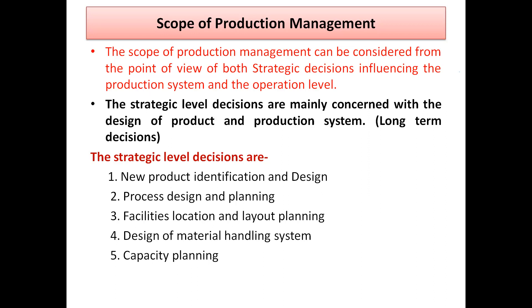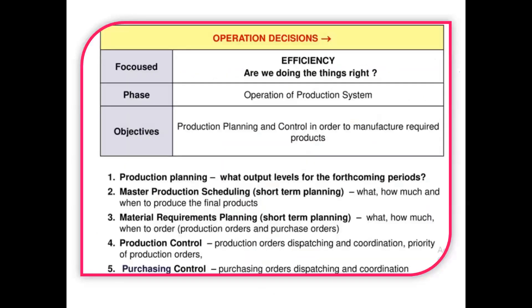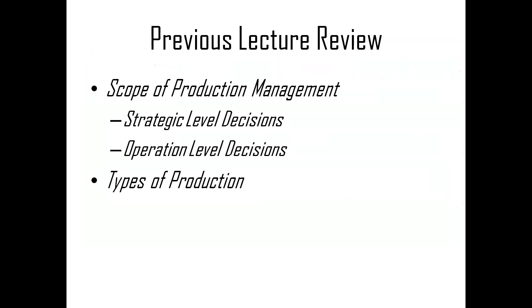For example, when a new vehicle is launched by any automotive sector company, the planning for that two-wheeler or four-wheeler may have started four to five years earlier, after continuous rigorous efforts, successful trials, and obtaining permissions from the required authorities. At the operational level, decisions include production planning, production control, and inventory control with maintenance and replacement. Strategic decisions span greater than two years, while production planning and MRP may be in months, weeks, or even days.